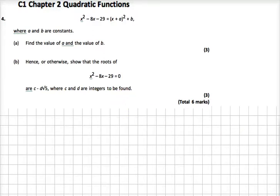Okay, so the last question on our little quadratics topic assessment. For part a, you can see we've got lots of information up here. We've got a quadratic x² - ax - 29 is equal to this expression here, which is completed square form.